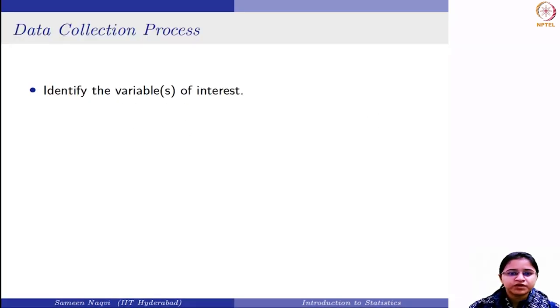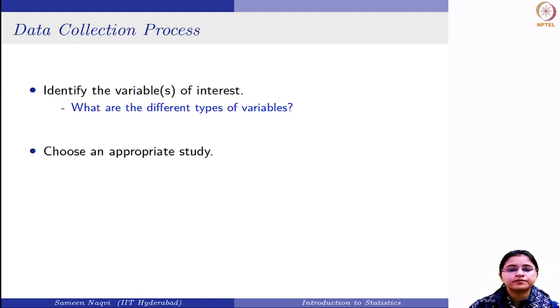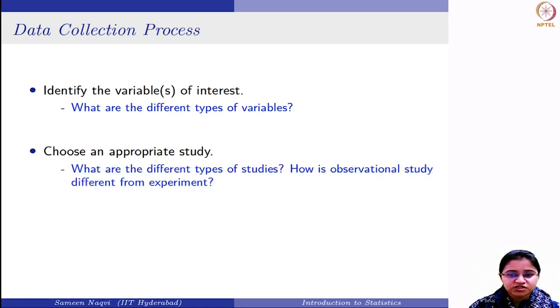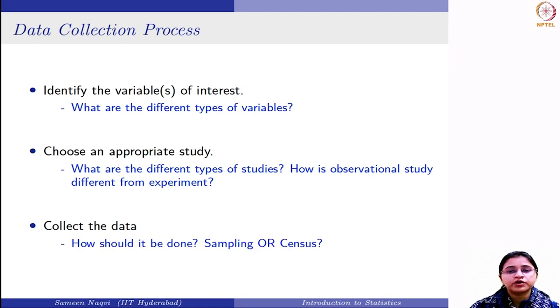We come to the data collection process. Here, the first step is to identify the variables of interest. This brings us to the question - are there different types of variables and if yes, what are those variables? Next, you need to identify an appropriate study for your problem, whether you are going to conduct an observational study or an experiment. What is the difference between these two types of studies and when should you perform them? You also need to identify whether you are going to opt for sampling survey or collect data from all individuals in the population - a census. So in this week, we are going to dissect this data collection process by finding the answers to these questions.